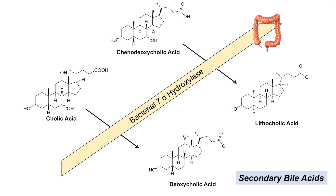Deoxycholic acid and lithocholic acid are known as secondary bile acids. Looking at the chemical structures: on cholic acid, the 7-alpha-hydroxyl group is removed to become deoxycholic acid — hence the name, as an oxygen is removed. The same happens with chenodeoxycholic acid: the 7-alpha-hydroxy group is removed by the bacterial enzyme to form lithocholic acid. The key structural differences between primary and secondary bile acids involve this hydroxyl group, which is absent on chenodeoxycholic acid and lithocholic acid but remains on deoxycholic acid.